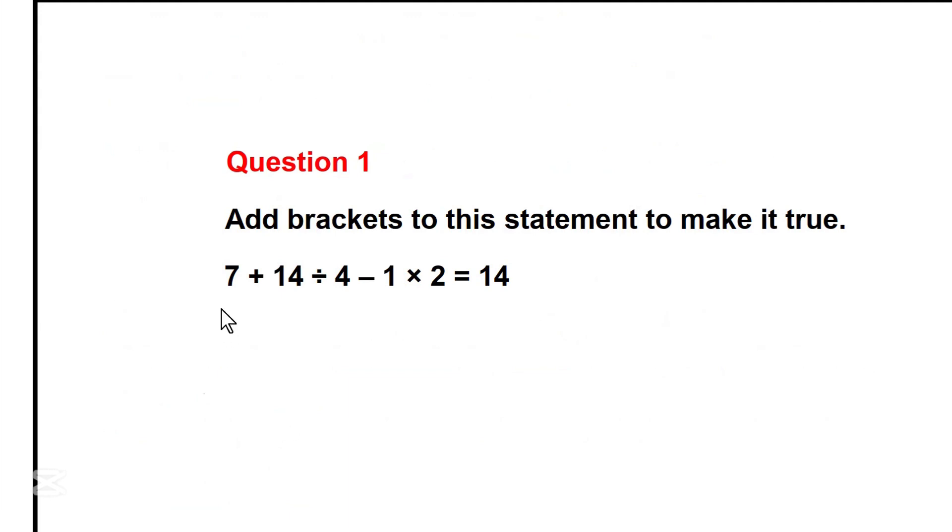We can decide to begin from the left-hand side by adding 7 to 14. 7 plus 14 equals 21, divided by 4 minus 1 equals 3, times 2. Let's see if this will give us 14, if this will be equal to 14.